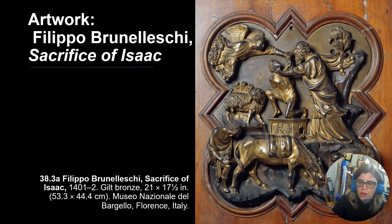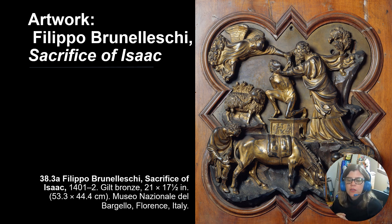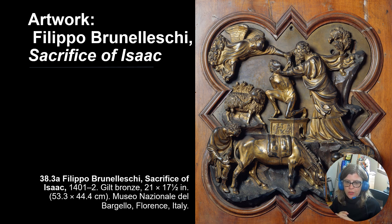There are a couple of ways artworks are commissioned. One way is a competition where you submit a sample of your work and the best one wins. Or it's a direct commission from a guild, group, or particular donor. In this case, it's a competition — a group called the Opera del Duomo and the Wool Guild held a contest for the baptistry doors. The examples we're going to look at are gilt bronze, and this one is by Brunelleschi, who also designed the dome.